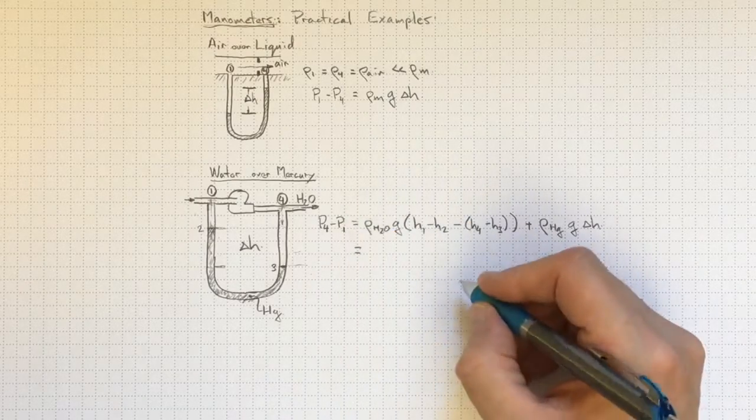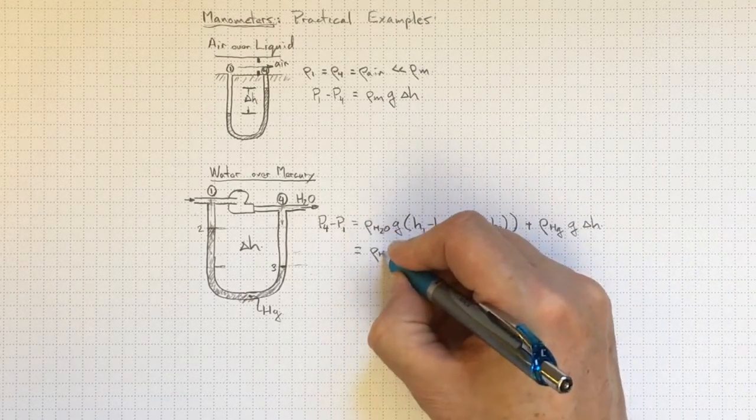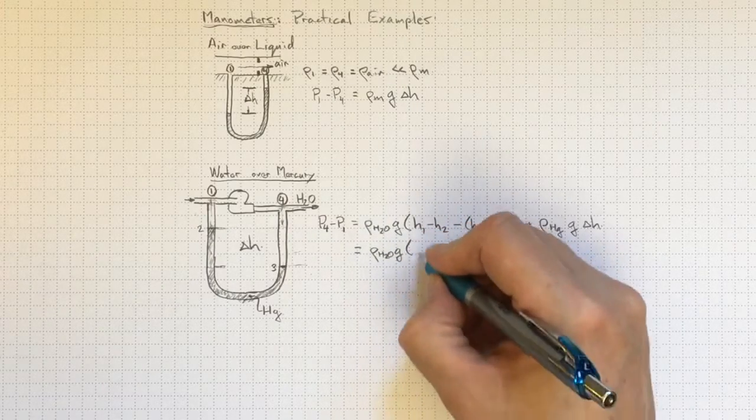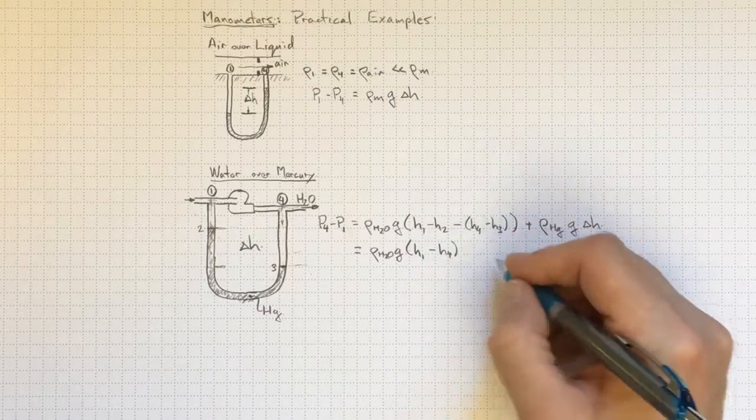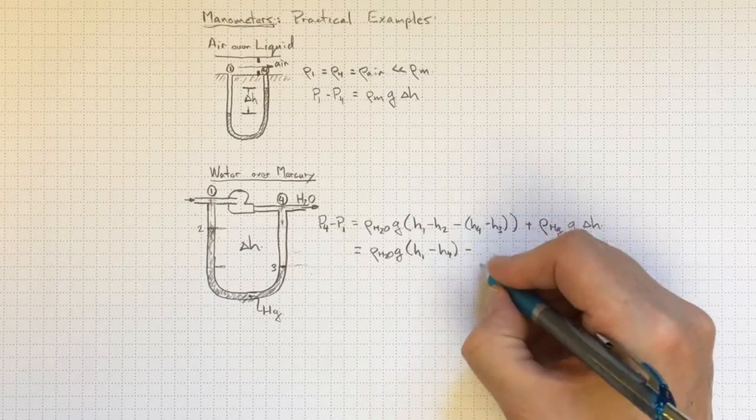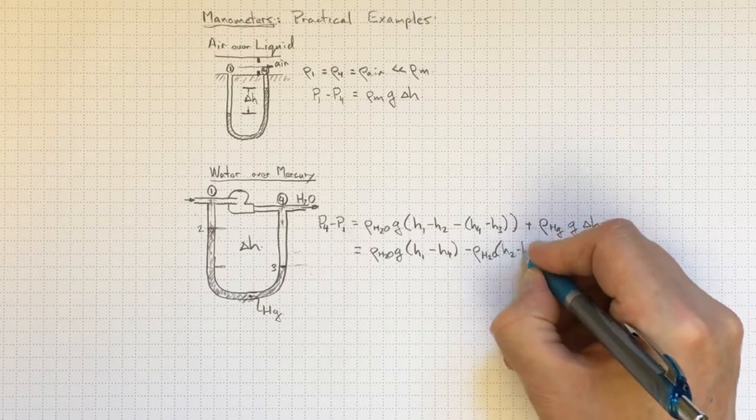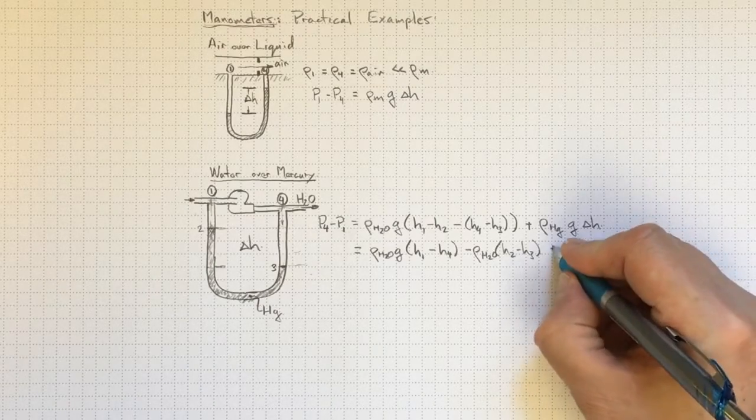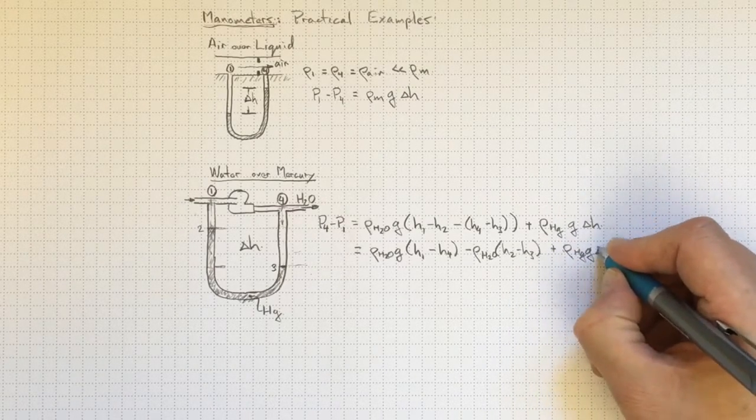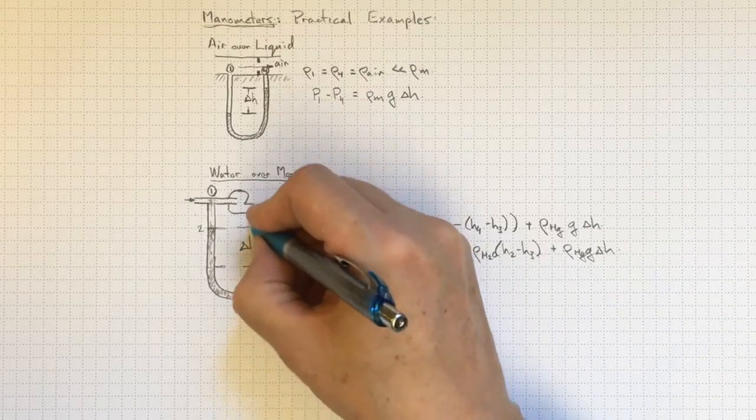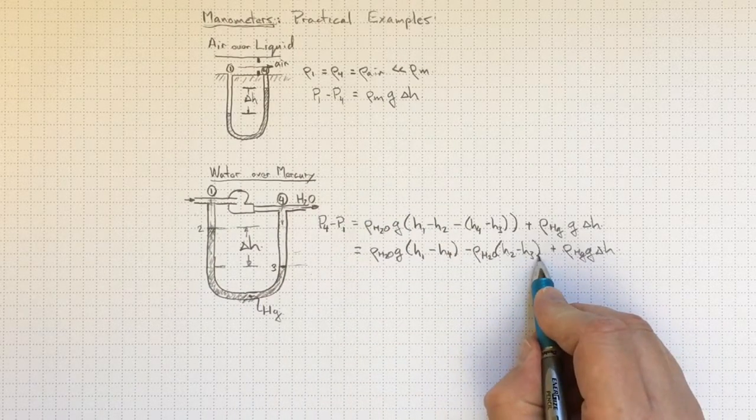So if we collect terms together, we'll wind up with rho H2O times G times H1 minus H4. And we'll have the two and the three minus rho H2O for H2 minus H3 plus the density of mercury times G delta H. And that delta H is H2 minus H3. So that's that height there.